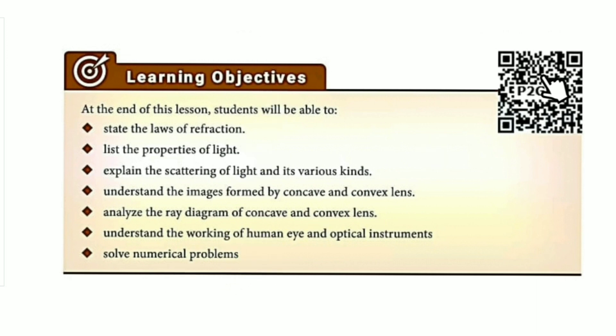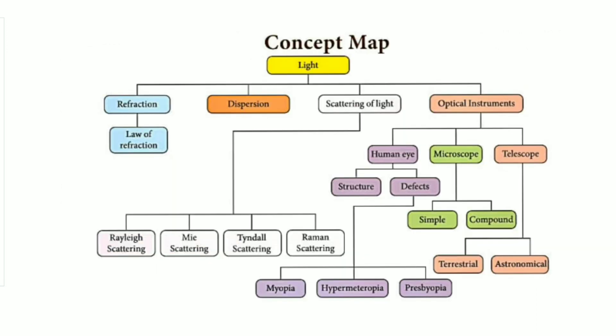The QR code link and ICT corner link are available in the description box. This is the concept map for the chapter.